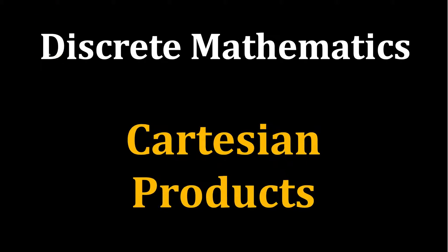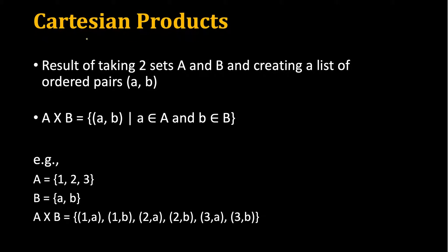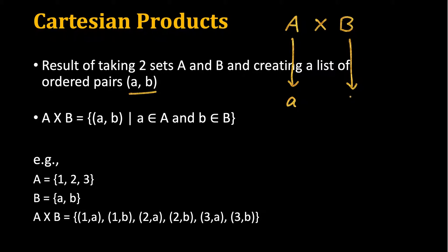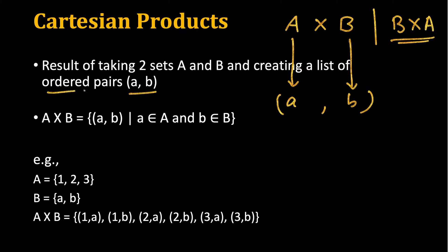In this video we are going to study about Cartesian products. The Cartesian product of two sets A and B is denoted by A cross B, and it consists of a set of ordered pairs (a, b). Here a comes from the first set and b comes from the second set. This is different from B cross A — ordering is important, which is why they are called ordered pairs.